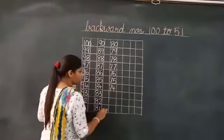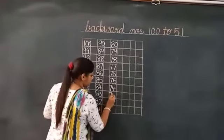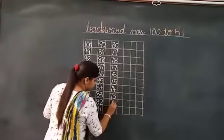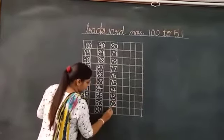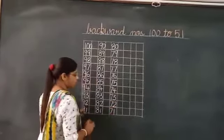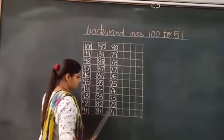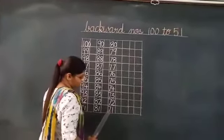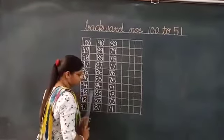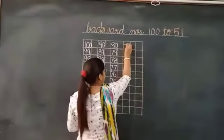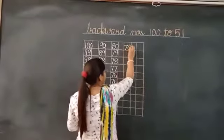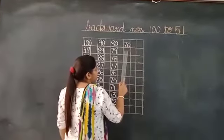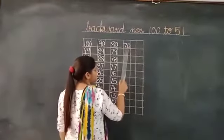74, 73, 72, 71. Now, which number will come before 71? That is 70.